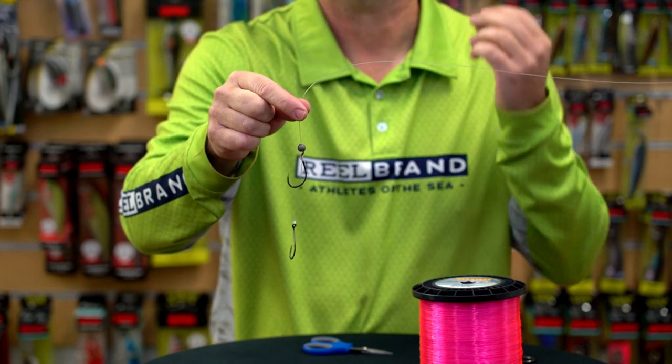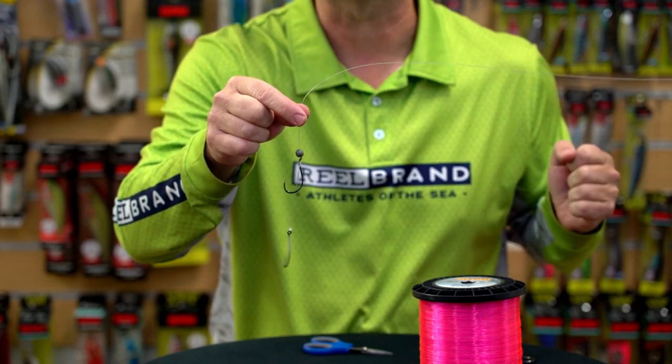Snelling hooks is a simple and effective way of presenting baits beautifully. Even though it looks a bit technical, it is not difficult to do, and this is what it looks like.